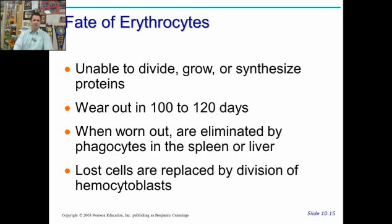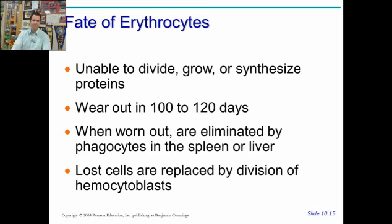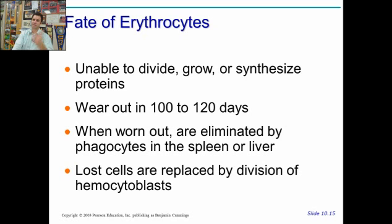When red blood cells get old — they last about three or four months — they don't have a nucleus and lack all kinds of organelles, so they can't divide, grow, or make new proteins. They're just oxygen carriers, reversibly binding oxygen. When they're old and don't bind oxygen well anymore, they're eliminated. Mostly the spleen does this work, but the liver also helps eliminate old red blood cells, and then new ones are made by the bone marrow. Lost cells are replaced by division of hemocytoblasts, not from the red blood cells themselves reproducing.